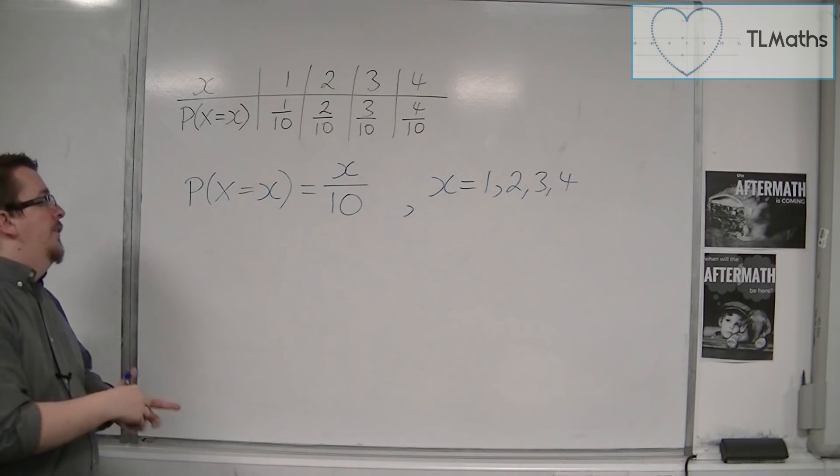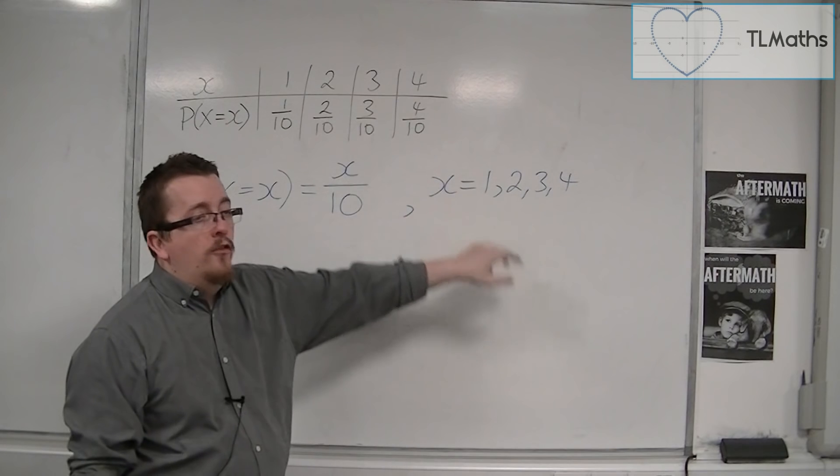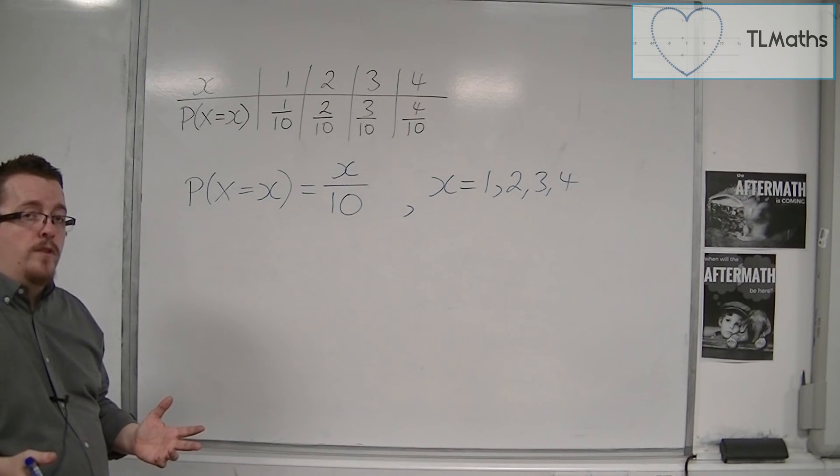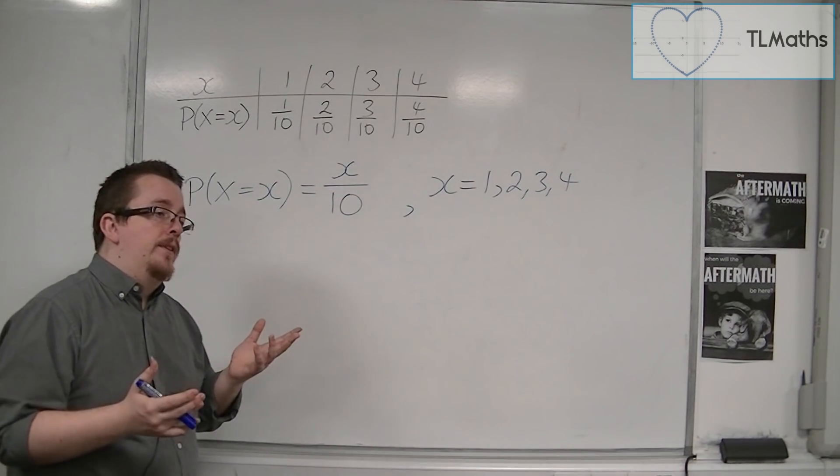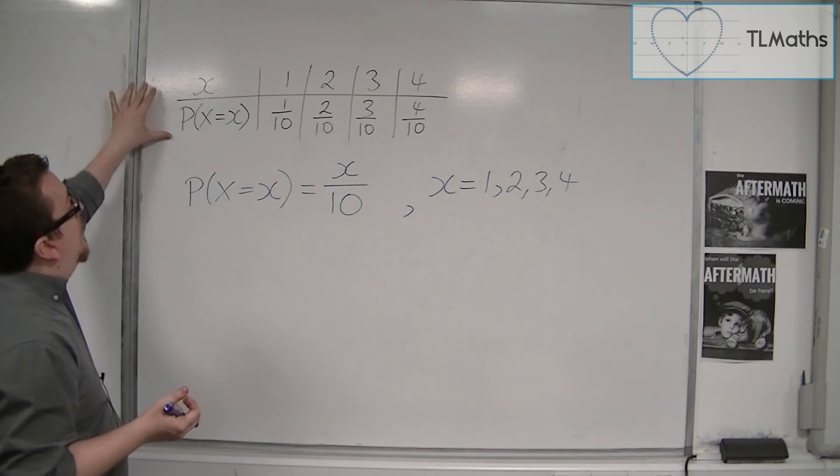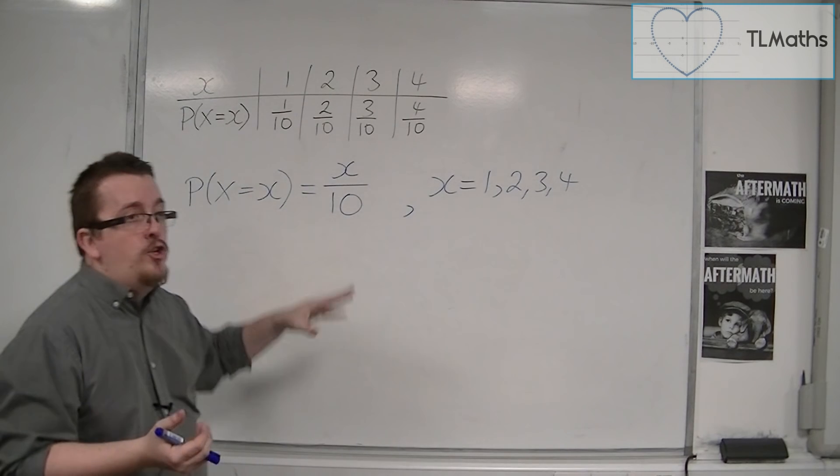So this is a new way of writing down the probability distribution. It can be written in two different ways: this tabular method, or as this kind of equation method.